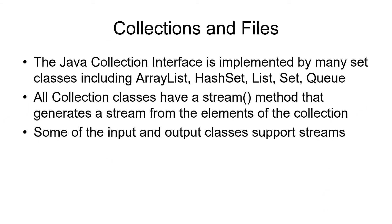The Java collection interface is used by many collections such as array lists, hash sets, list queues, and all sorts of collection items. The interface supports the stream method that generates a stream of elements from these collections. There are also stream methods for input and output classes — you can use a BufferedReader and create a stream of lines from it.